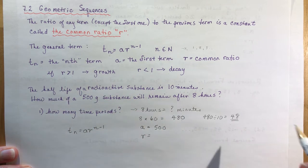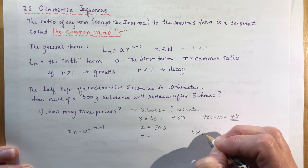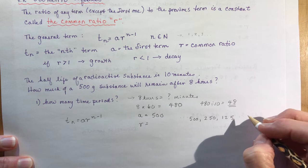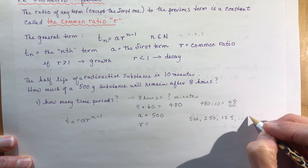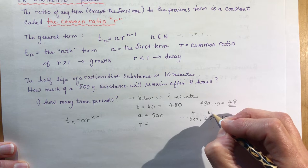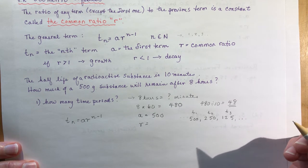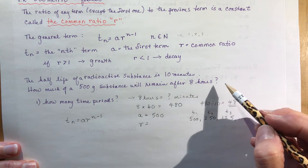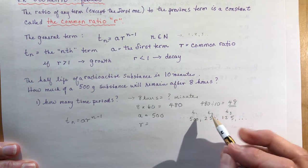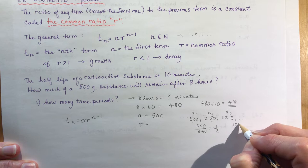The tricky part is finding r. Since it's a half-life, if you wrote out the sequence yourself it would go: 500, 250, 125 — dividing by half each time. So the common ratio is 250 over 500, which is one half. You can verify: 125 over 250 is also one half.